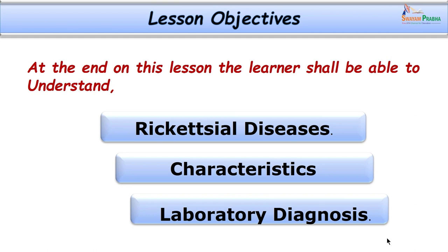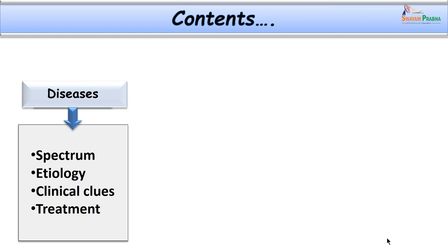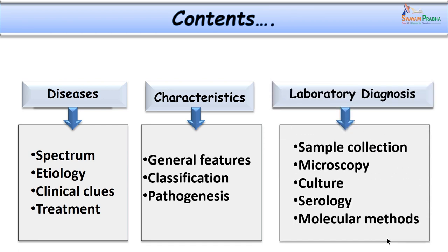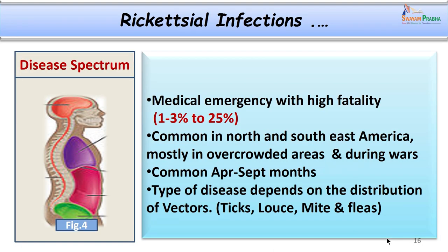This brings us to the lesson objectives of today's class. We are able to learn what are the other infections caused by rickettsial organisms, the organism characteristics and the lab diagnosis of such diseases. We will discuss the topic under the following headings: disease spectrum, etiology, clinical presentation, treatment of important rickettsial group of diseases, organism characteristics, general and cultural characteristics, pathogenesis, and laboratory diagnosis in detail.